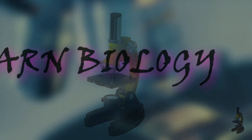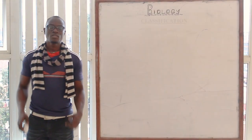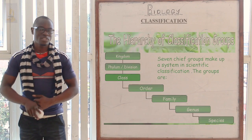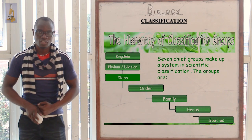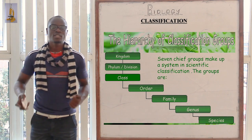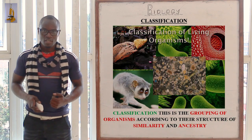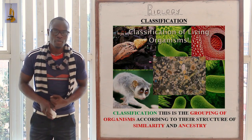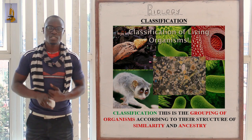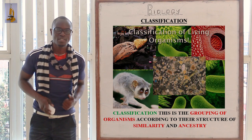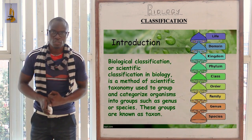Biology. Welcome to this classroom. Today we are going to study about classification. What is classification? Let's define. Classification is the grouping of organisms according to the structure of similarity and ancestry. That is classification.